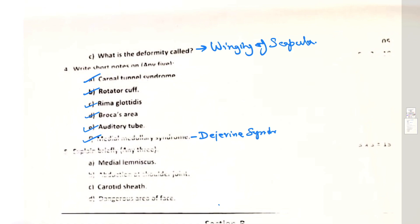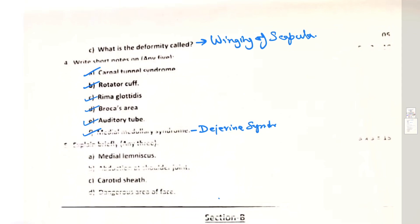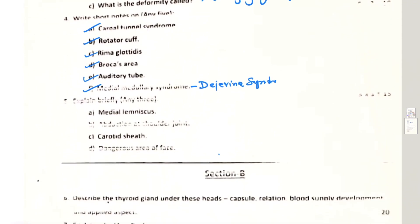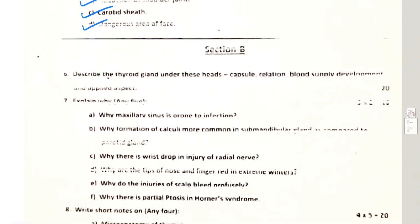Rima glottidis, you know it's the narrowest portion of the cavity of the larynx with the vocal folds that actually keep changing the opening of this rima glottidis during phonation and breathing. Explain briefly: medial lemniscus, abduction at shoulder joint, carotid sheath, dangerous area of the face.